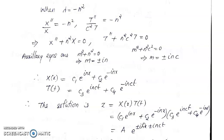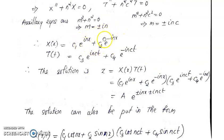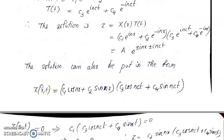For the second part, using Euler's formula we write the exponentials in terms of cosines and sines. The solution becomes z(x,t) = (c₁cos(nx) + c₂sin(nx))·(c₃cos(nct) + c₄sin(nct)).